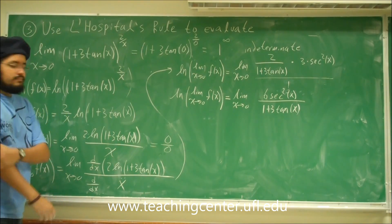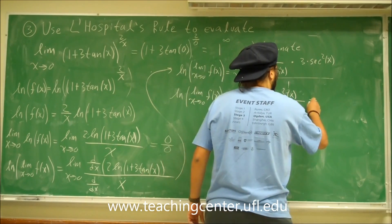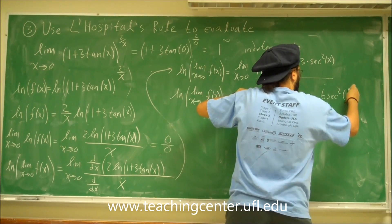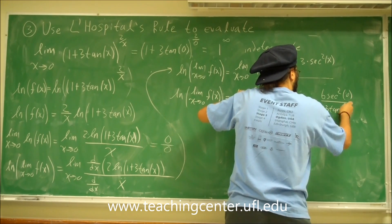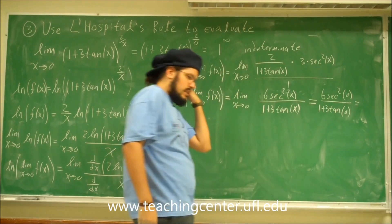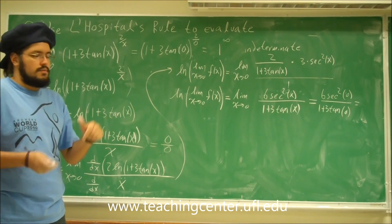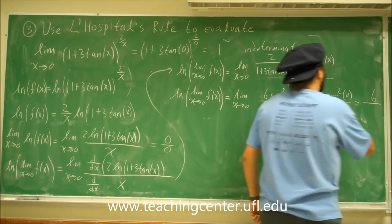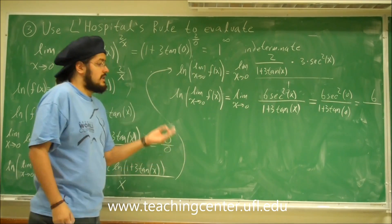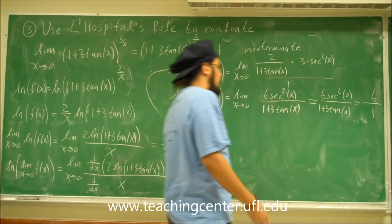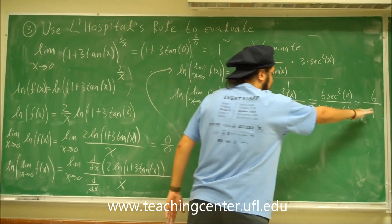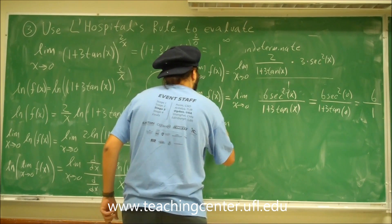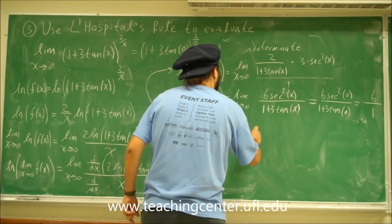Now let's plug in 0. We get 6 secant squared of 0 divided by 1 plus 3 tangent of 0. Secant squared of 0 is 1 over cosine squared of 0, which is 1 over 1 squared = 1. So the top is 6 times 1 = 6. On the bottom, tangent of 0 is 0, so 1 plus 0 = 1. We get 6 divided by 1 = 6. Therefore, ln of the limit as x approaches 0 of f(x) equals 6.